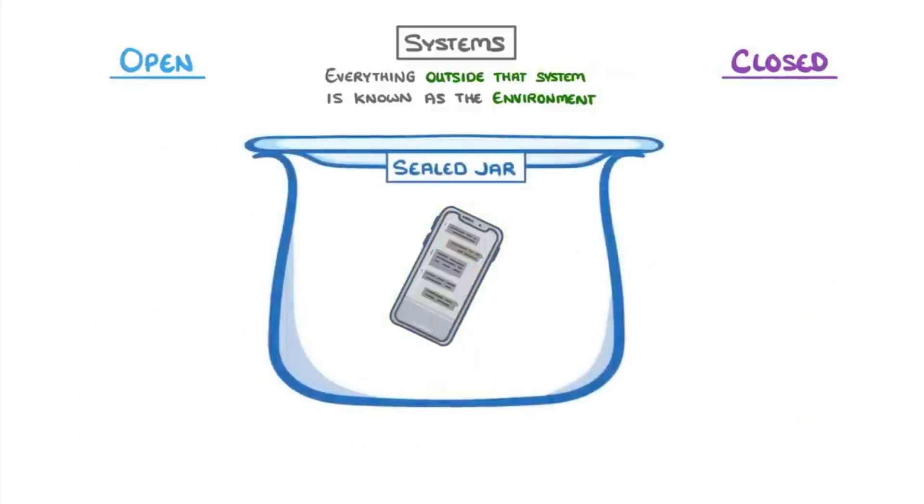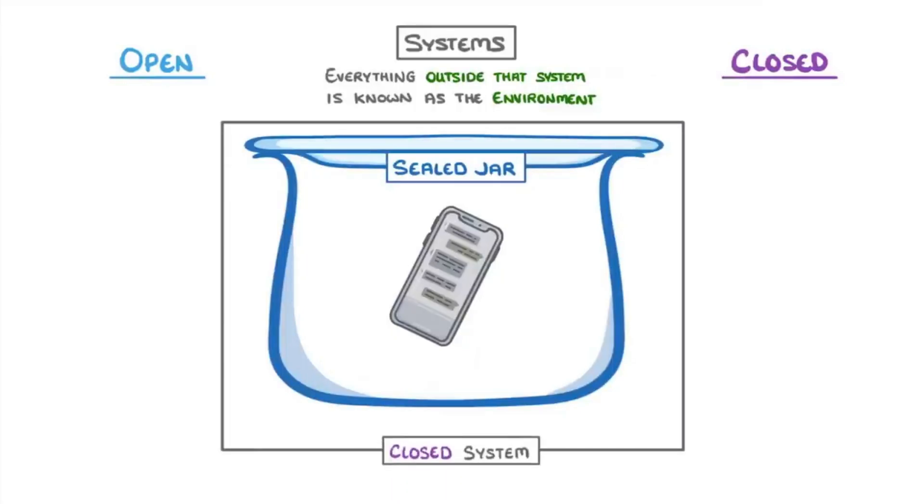On the other hand, if we put your phone in a sealed jar, then our system would be the entire contents of the jar, including the phone and the air within the jar, and we would now call it a closed system, because energy and matter can't enter or escape.